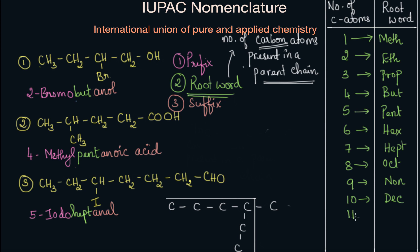If we have eleven, it is called undec. Twelve is dodec. Thirteen is tridec. Fourteen is tetradec. You can go up to twenty, which is icos. Don't worry too much about these — if you know up to ten carbon atoms, that is sufficient. Even if you don't get it right away, that's totally fine. By practice, you will understand it better.